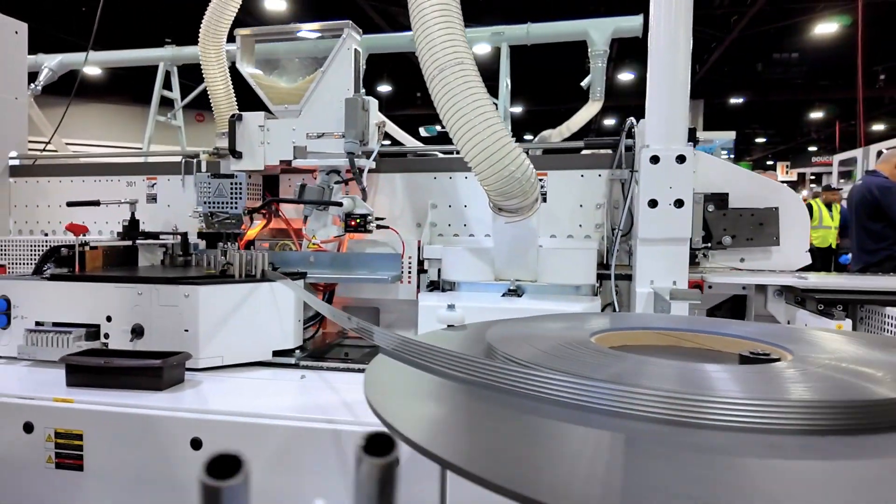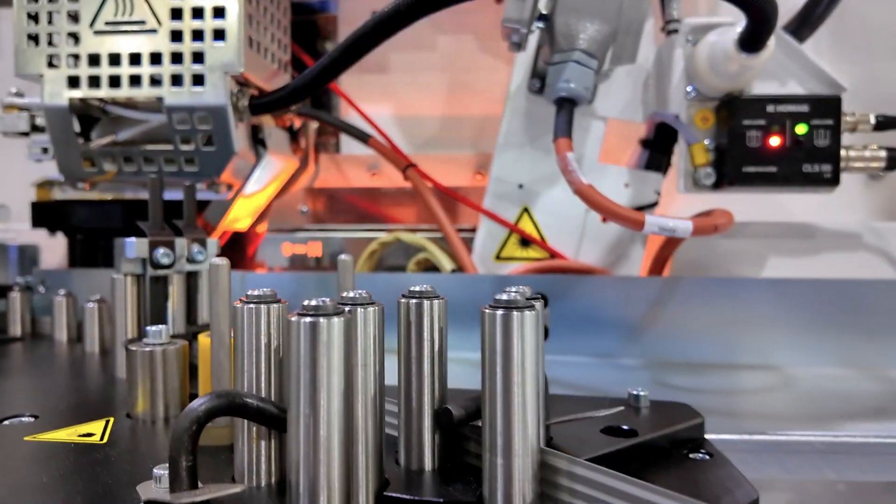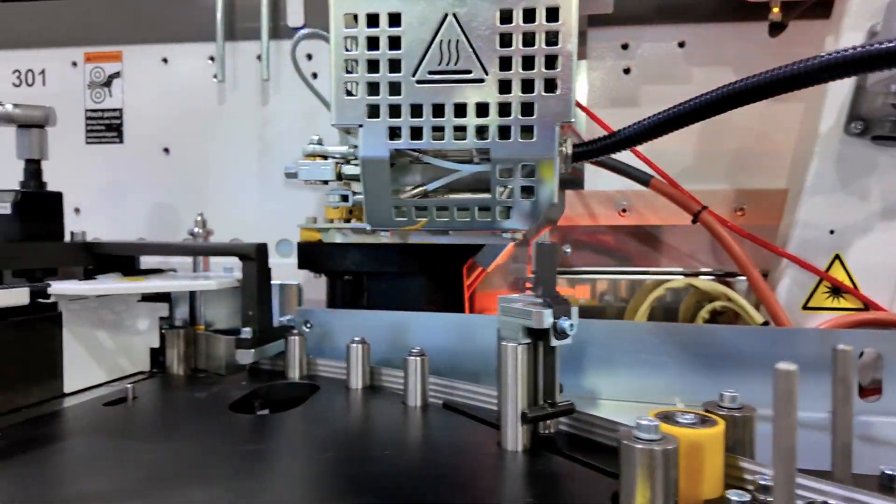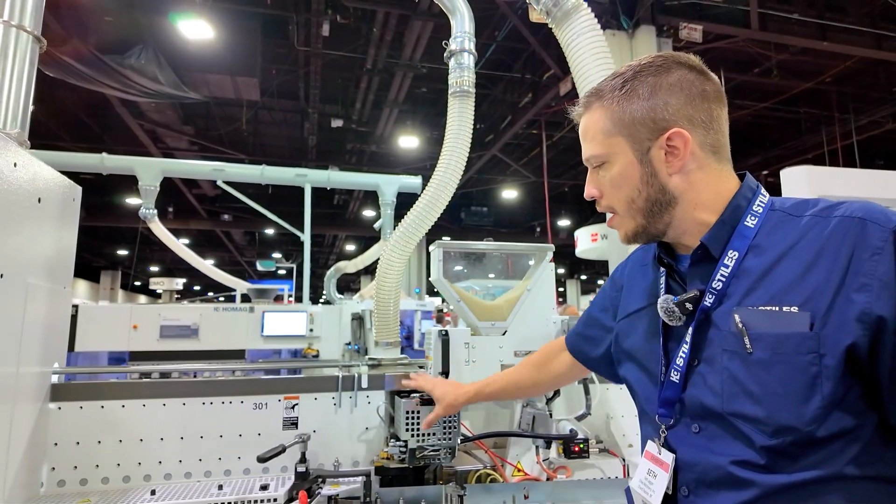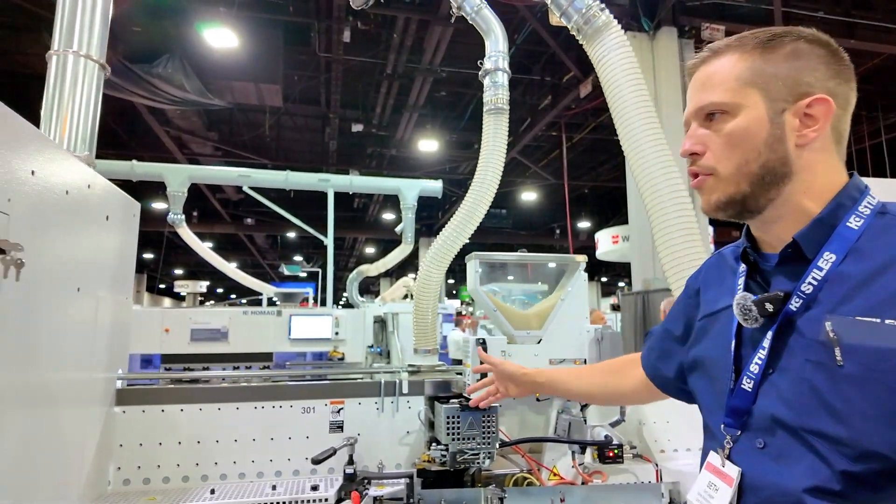This particular machine here is a two-channel Edge Bander. I've got both of my channels here, as well as a horizontal tape roll, melting unit, and our most popular QA65 glue pot.